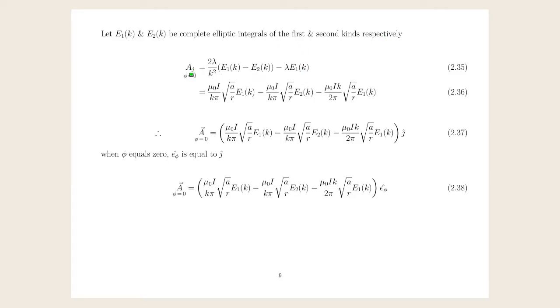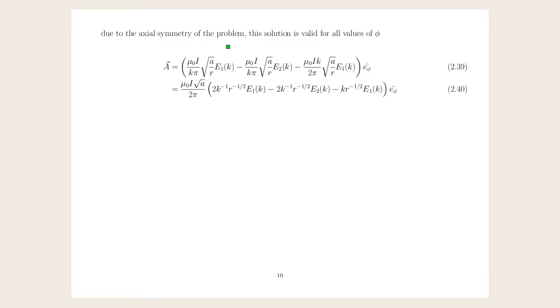That gives us an answer for Aj and we've previously calculated Ai to be 0. We can substitute them into our original equation to give an expression for the vector magnetic potential. It's only one component in the j direction. This is only solved for φ equals 0 so when φ equals 0, j is actually equal to e_ρ which is our unit vector that's tangential to the radial vector. So we can replace that j term with the e_ρ vector. Due to the axial symmetry of the problem this solution will be valid for all values of φ because this unit vector will actually change as the value of φ changes.